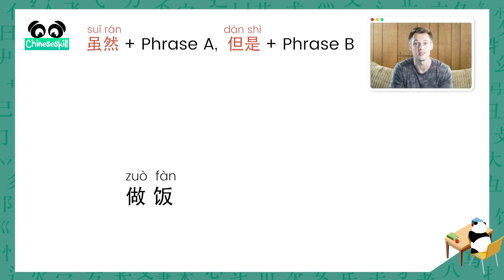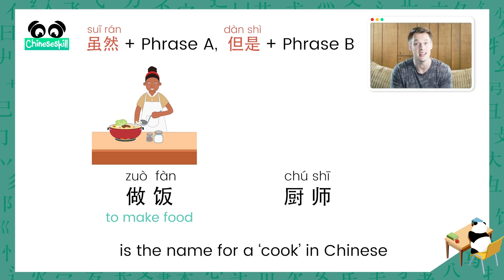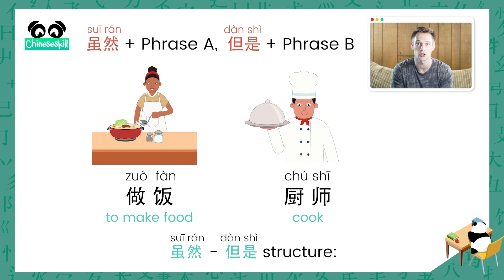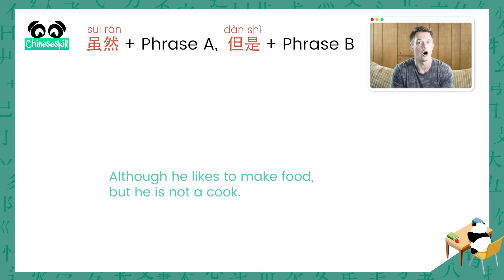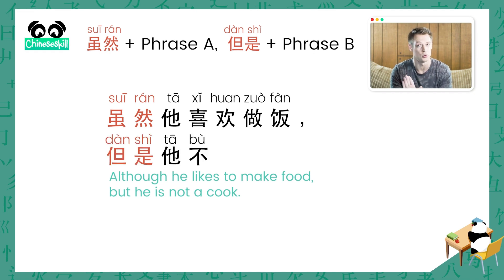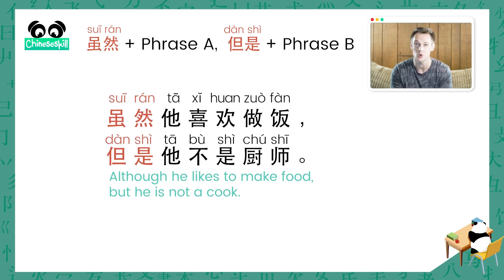做饭 means to make food, and 厨师 is the name for a cook in Chinese. Using the 虽然...但是 structure, how would you say: Although he likes to make food, but he is not a cook? 虽然他喜欢做饭,但是他不是厨师。 Although he likes to make food, but he is not a cook. Did you get that right?